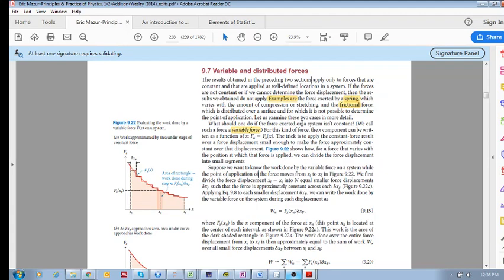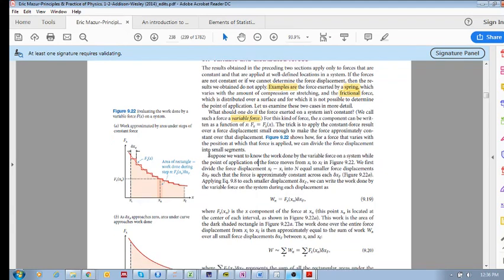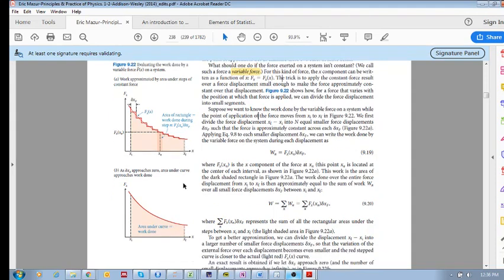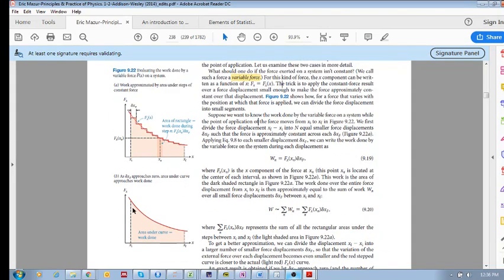So the first is a variable force. Here's an example of a variable force. You've got the force, the magnitude of the force on the vertical, and the displacement on the horizontal. And in this specific case, you've got a force that decreases as the object moves from x initial to x final. And so what we want to do is we want to calculate the work done by this force. We know that basically work is force times a displacement. But what do you do when you have a variable force?